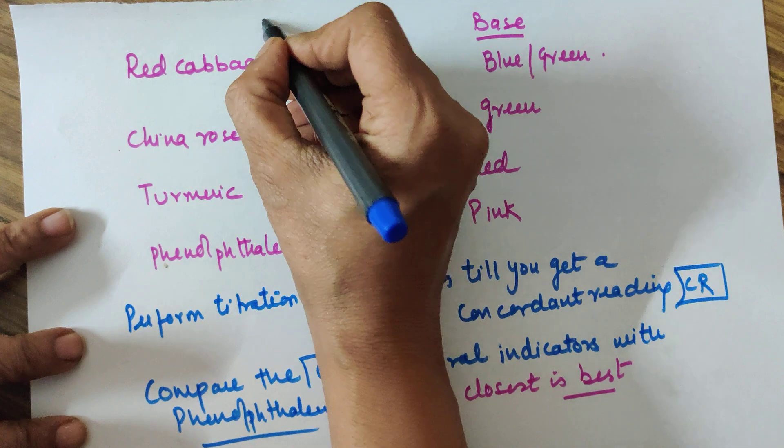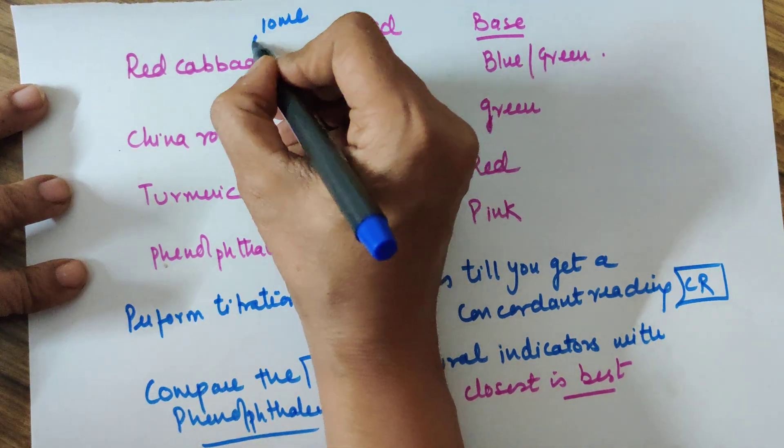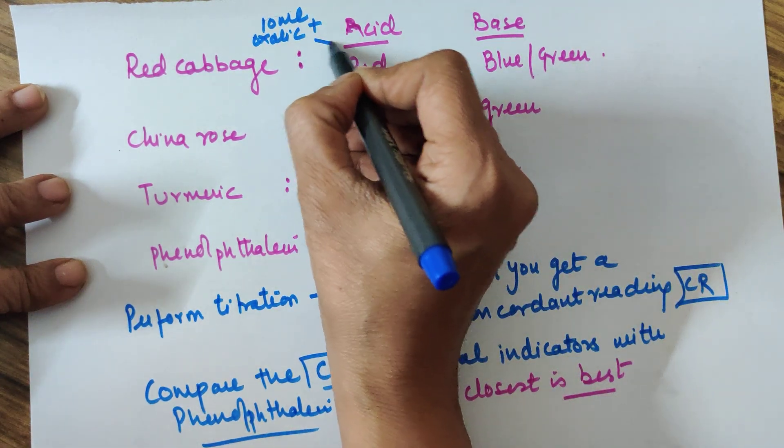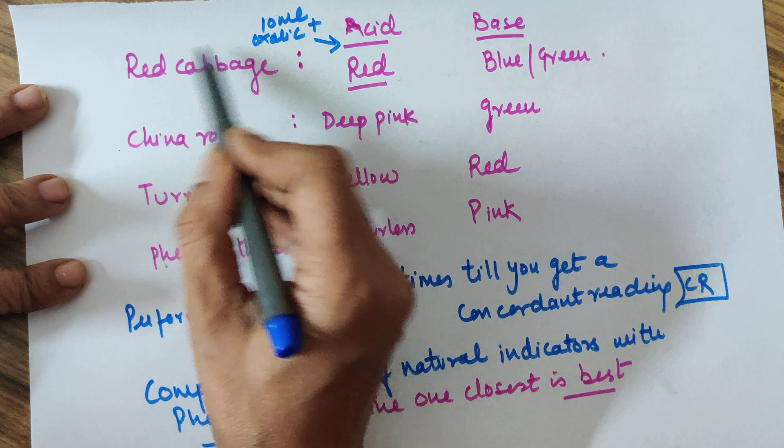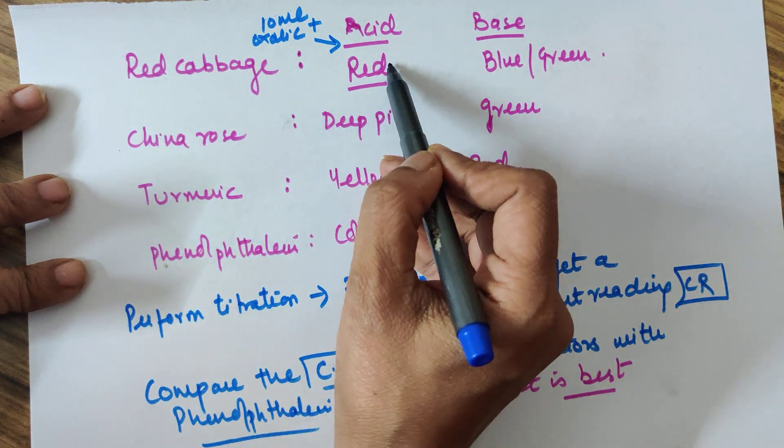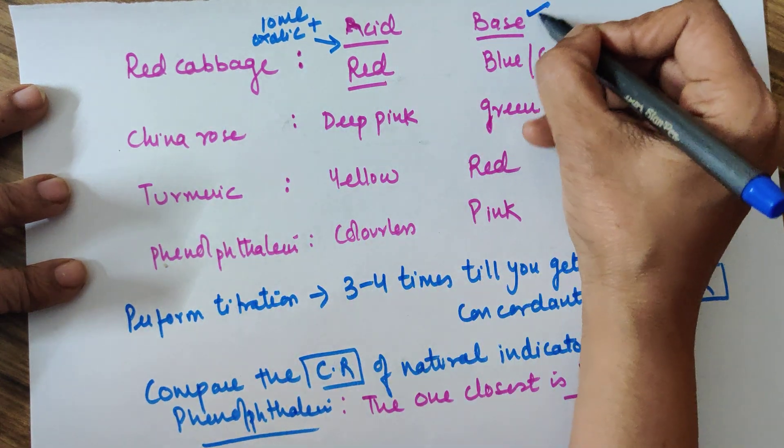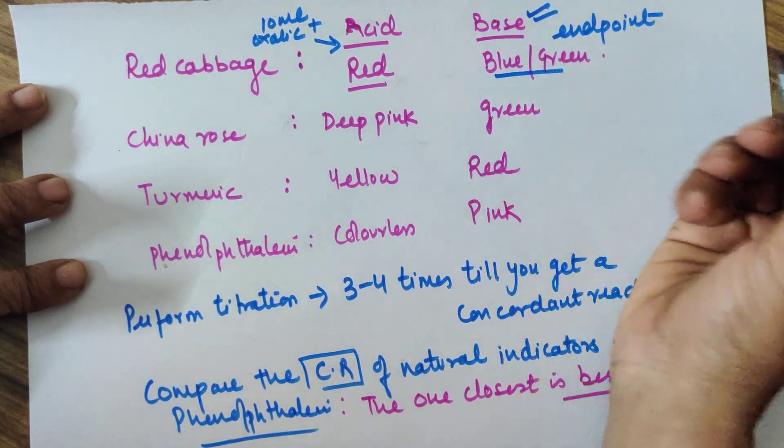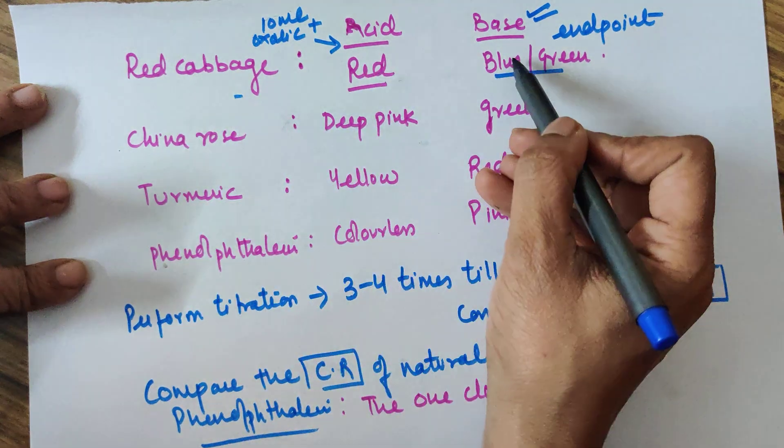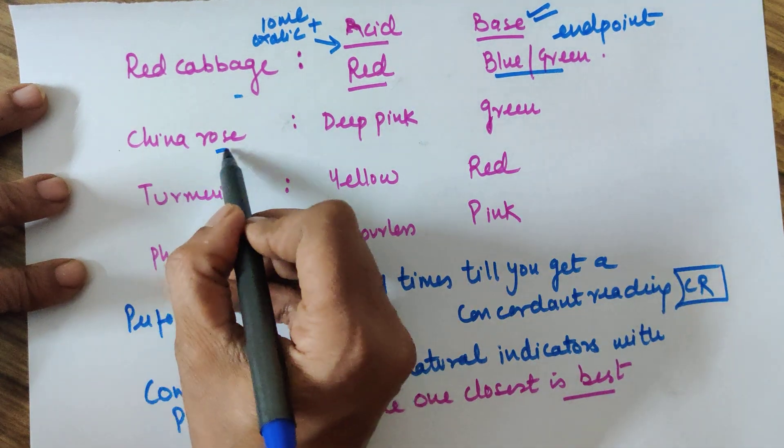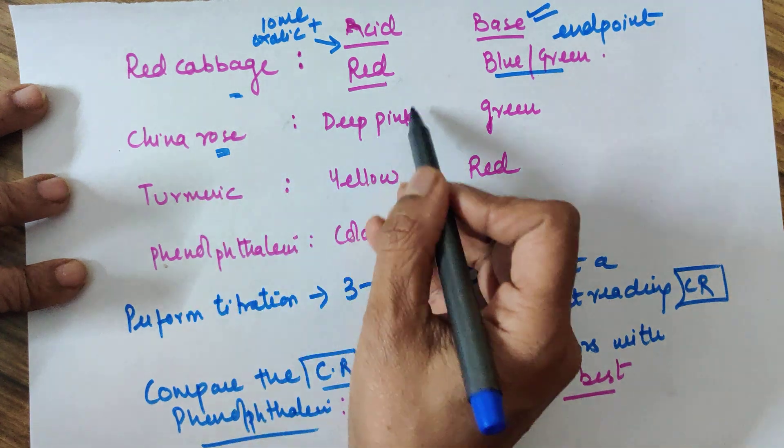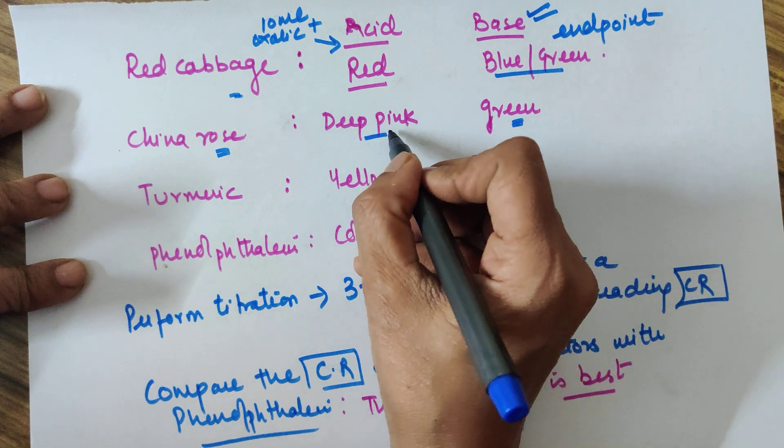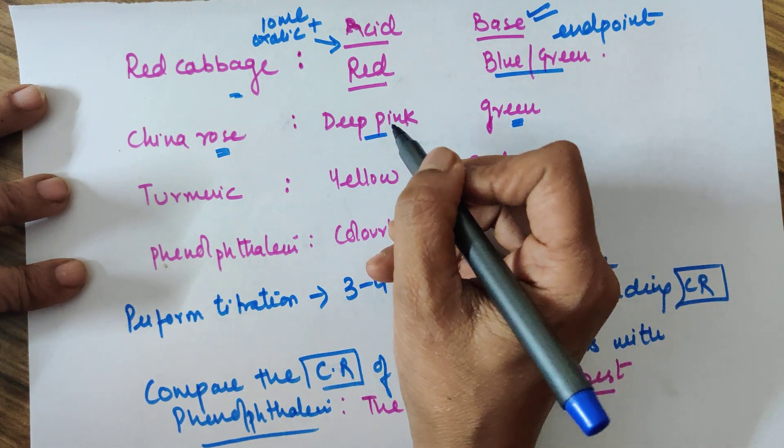Now let's talk about what are the color changes. When you take 10 ml oxalic acid plus the indicator, the solution is acidic. So if you use red cabbage, it will be red, and when you start the titration, you add the base. The endpoint is when the color changes to blue or green. For red cabbage, the color change will be red to blue or green. If you use China rose, your initial solution will be deep pink and it should change to green.